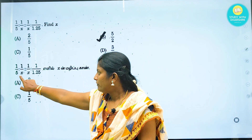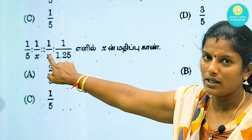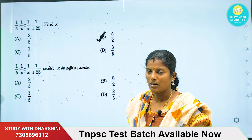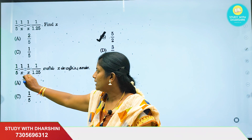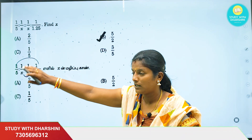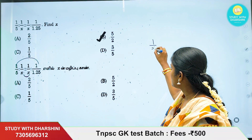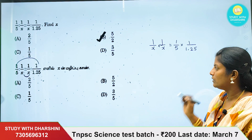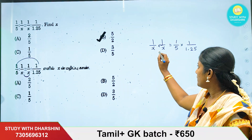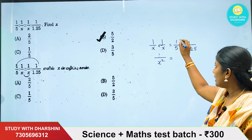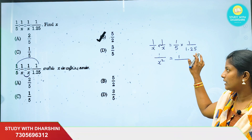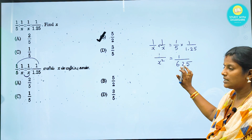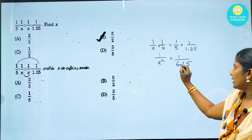Next question: 1 by 5 is to 1 by x equal 1 by x is to 1 divided by 1.25. You can see the last sum is equal — this is a proportion. We apply cross multiplication: first and last terms multiply together.